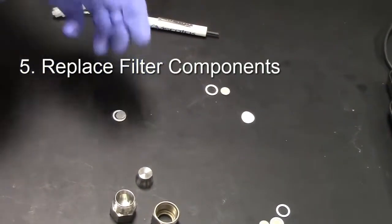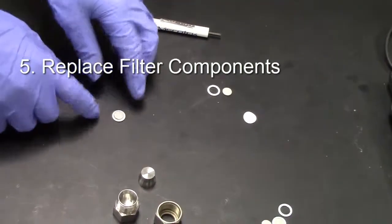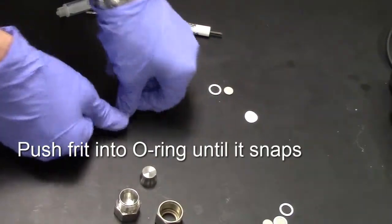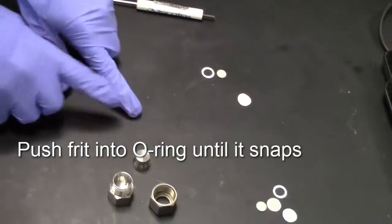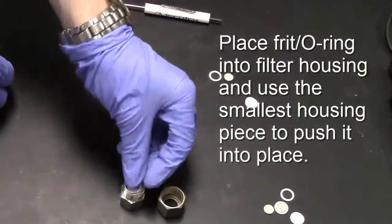Step 5. Replace the filter components. On a flat surface, place the new frit inside a new O-ring and push it into place until it snaps. Flip the pieces over to make sure that they're secure.